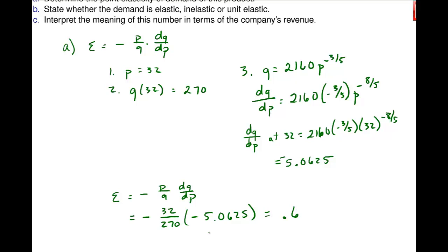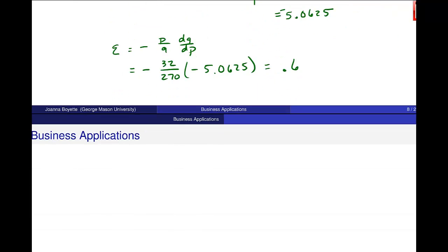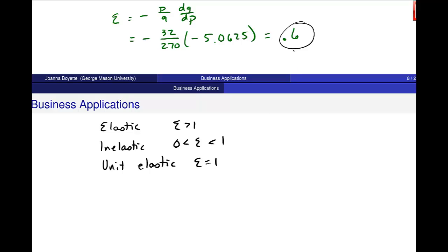State whether the demand is elastic, inelastic, or unit elastic. So we saw this is 0.6. For elastic demand, epsilon is bigger than 1. Inelastic, it's between 0 and 1. Unit elastic is 1. Here I have this 0.6 - it falls right here in this quantity. So for part b, I have inelastic demand for this particular function.